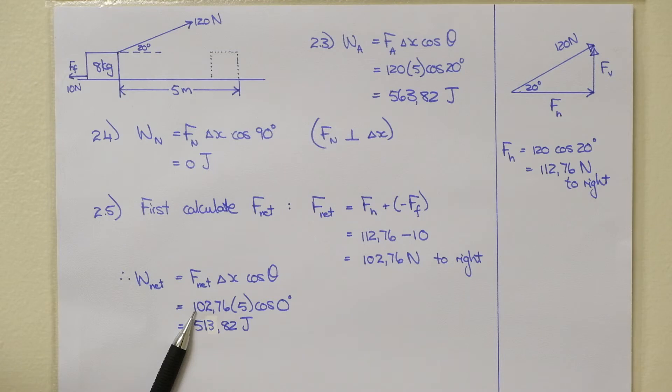Substitute that value into our original equation. Your delta x is 5 and it's cos of 0 because the force is to the right and the displacement is also to the right. And there is your final answer for W net.